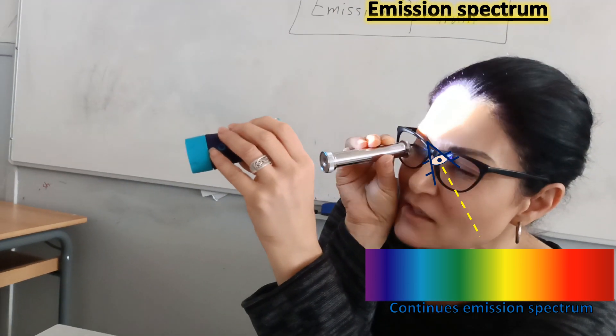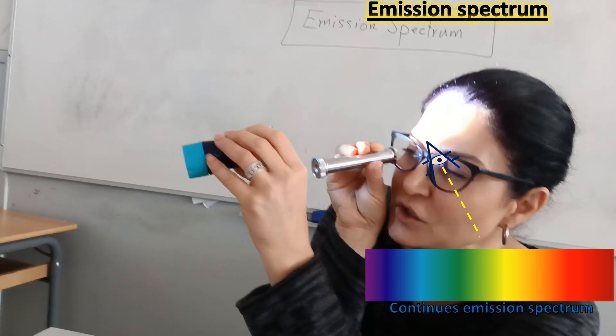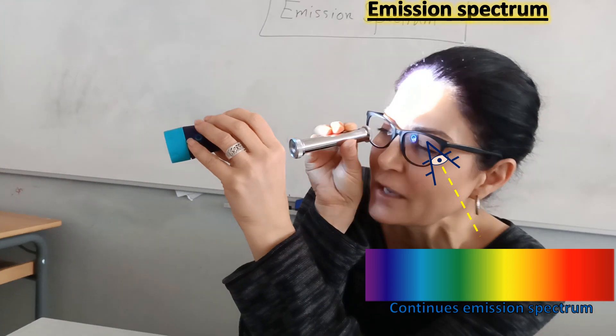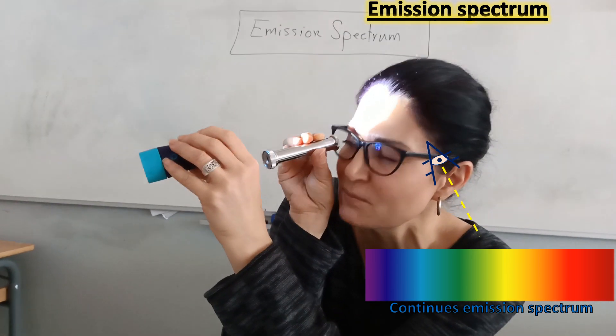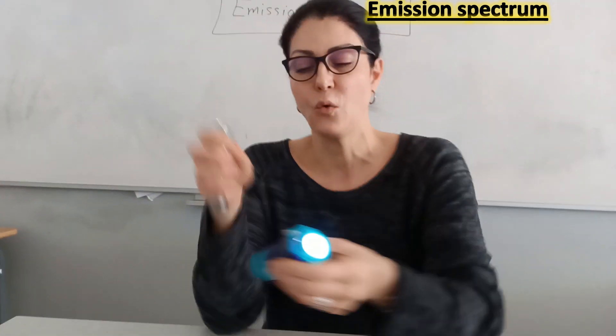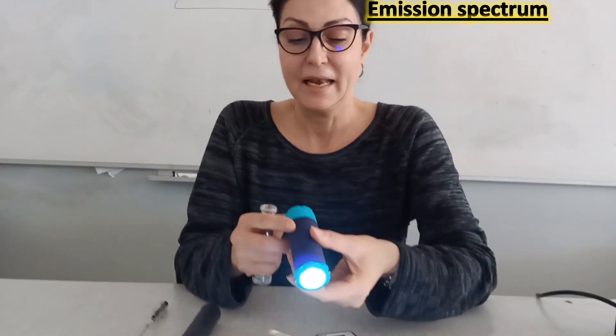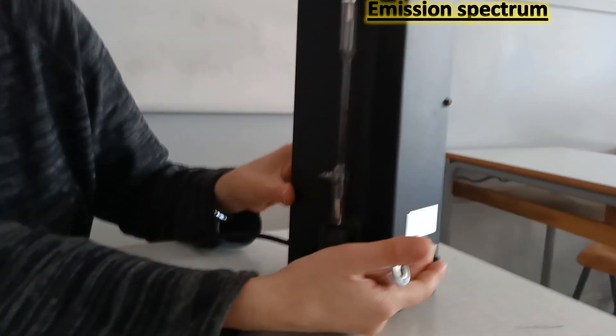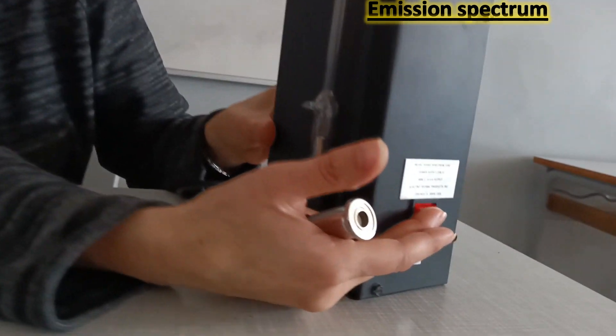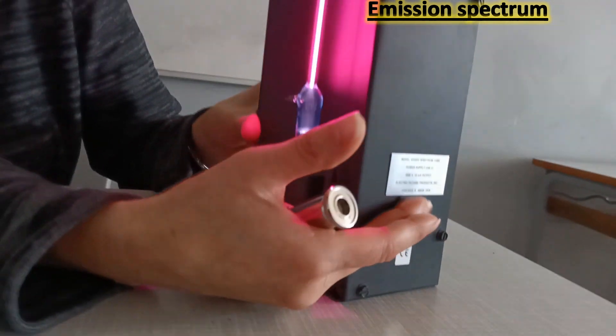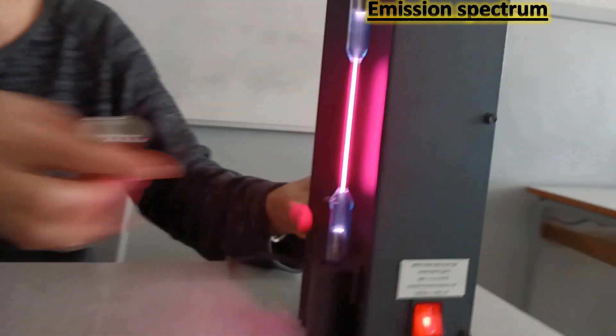This spectrum is called a continuous emission spectrum. Now let me show you the discrete emission spectrum. Here is a gas discharge lamp — it is a hydrogen gas tube.